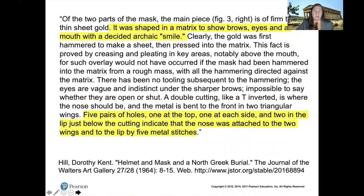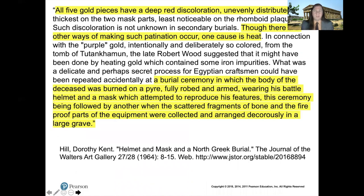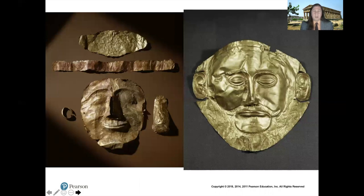Returning to the warrior's burial assemblage, the gold mask was shaped on a wooden matrix — very thin gold hammered onto a preform. The archaic smile is visible. These elements would have been placed on the deceased warrior, who was placed on a pile of wood and set on fire. The fire gives a unique purple color to the gold elements. We can see strong similarity between this mask and the Mask of Agamemnon from the Mycenaean burial, showing a direct cultural connection.